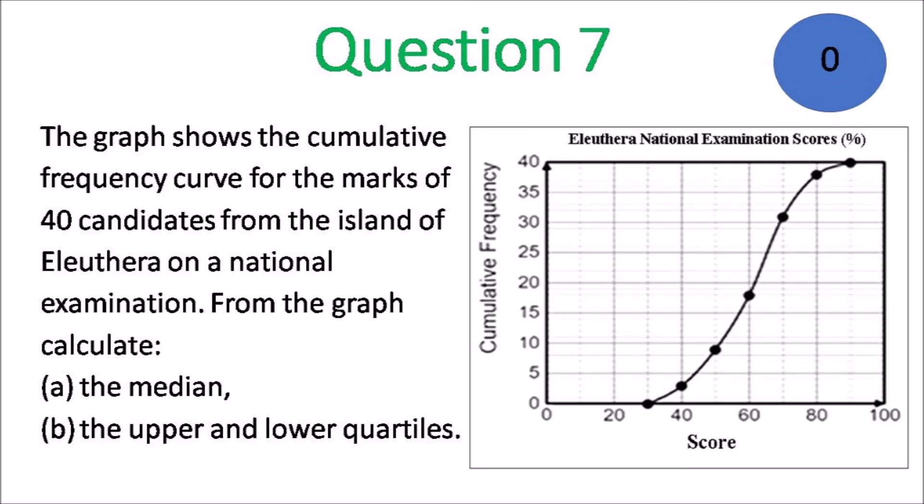The graph shows the cumulative frequency curve for the marks of 40 candidates from the island of Lutra on a national examination. From the graph, calculate A, the median, and B, the upper and lower quartiles.